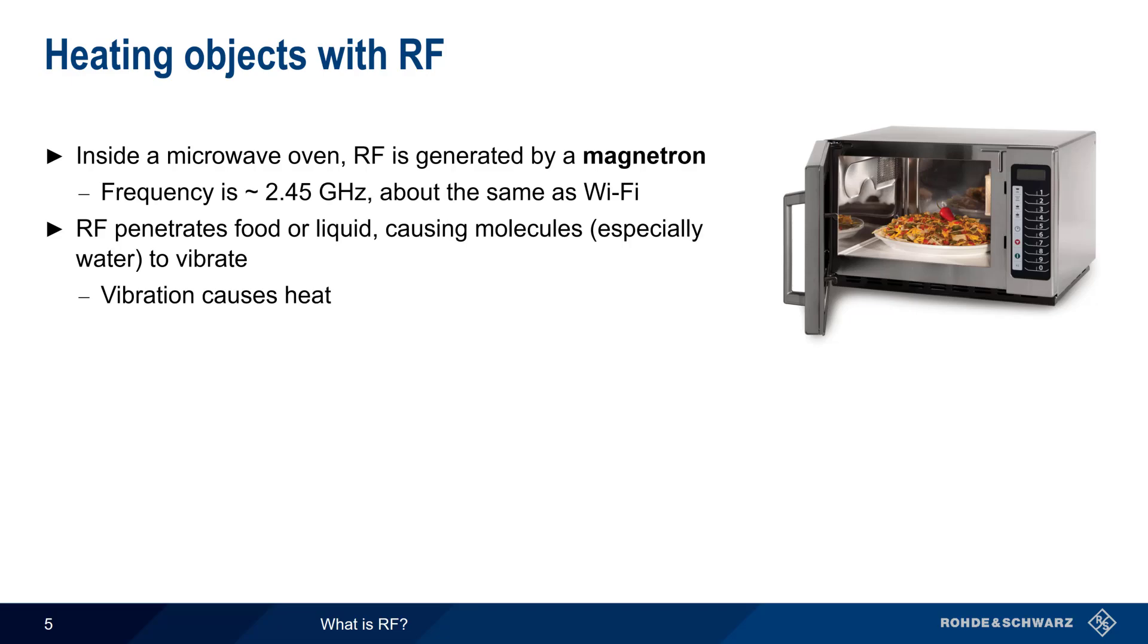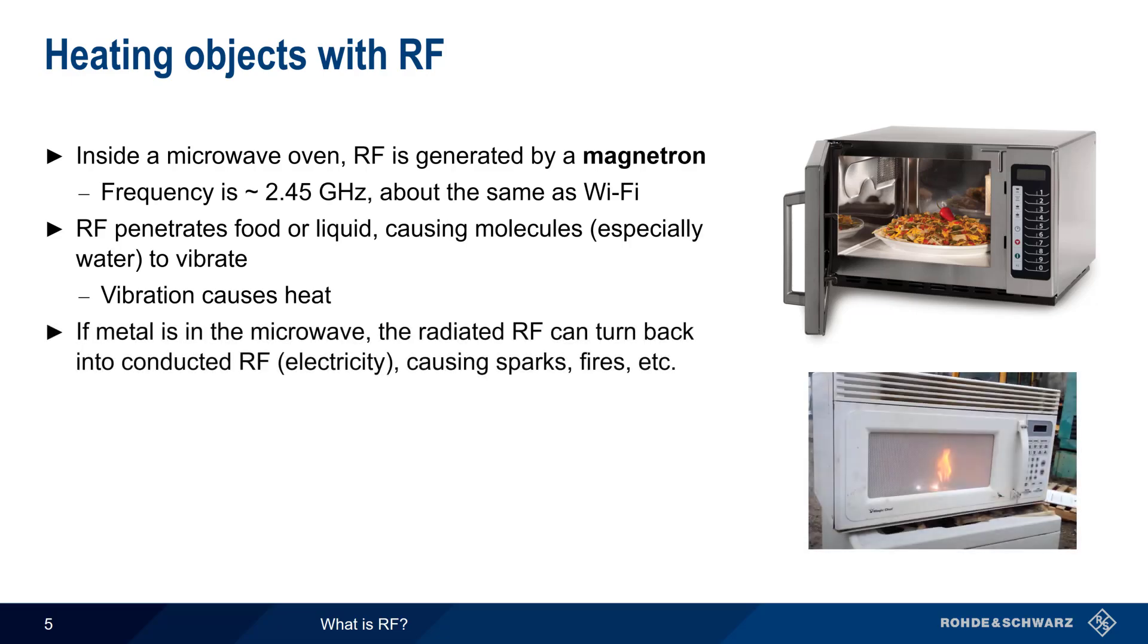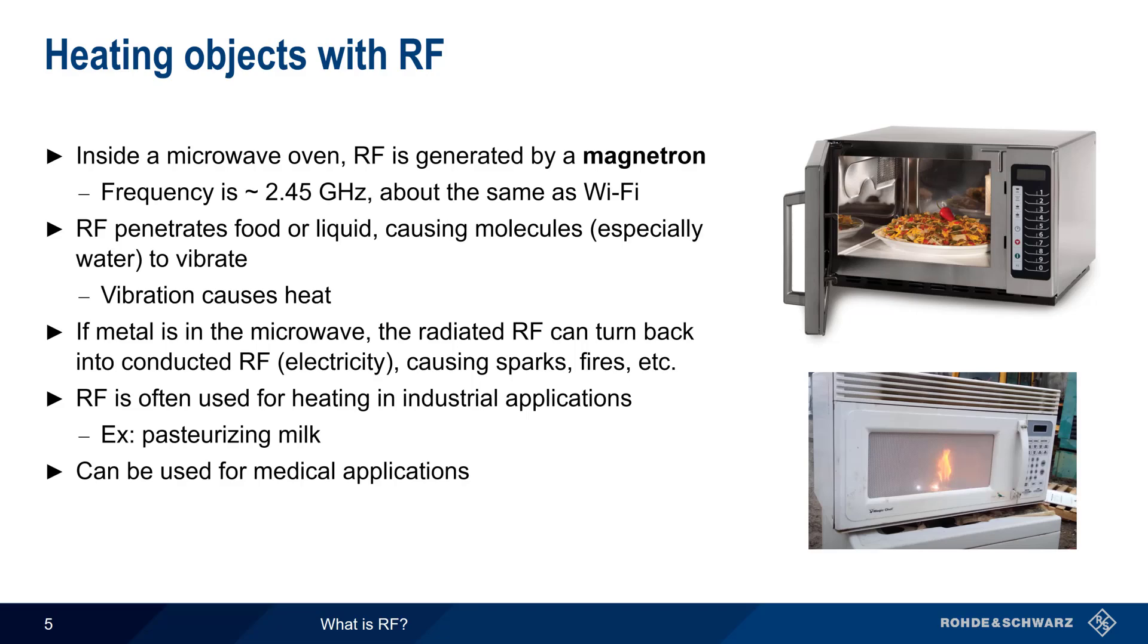One common warning when it comes to using RF to heat food in a microwave oven is to avoid having metal objects in the oven. This is because the metal can turn the radiated RF produced by the magnetron back into conducted RF, and the resulting currents in the metal can cause sparks, fires, etc. In addition to warming up leftovers, RF is also used for heating in industrial applications, such as pasteurizing milk, and is now also found in some medical applications, ranging from destroying cancerous cells to various cosmetic treatments.